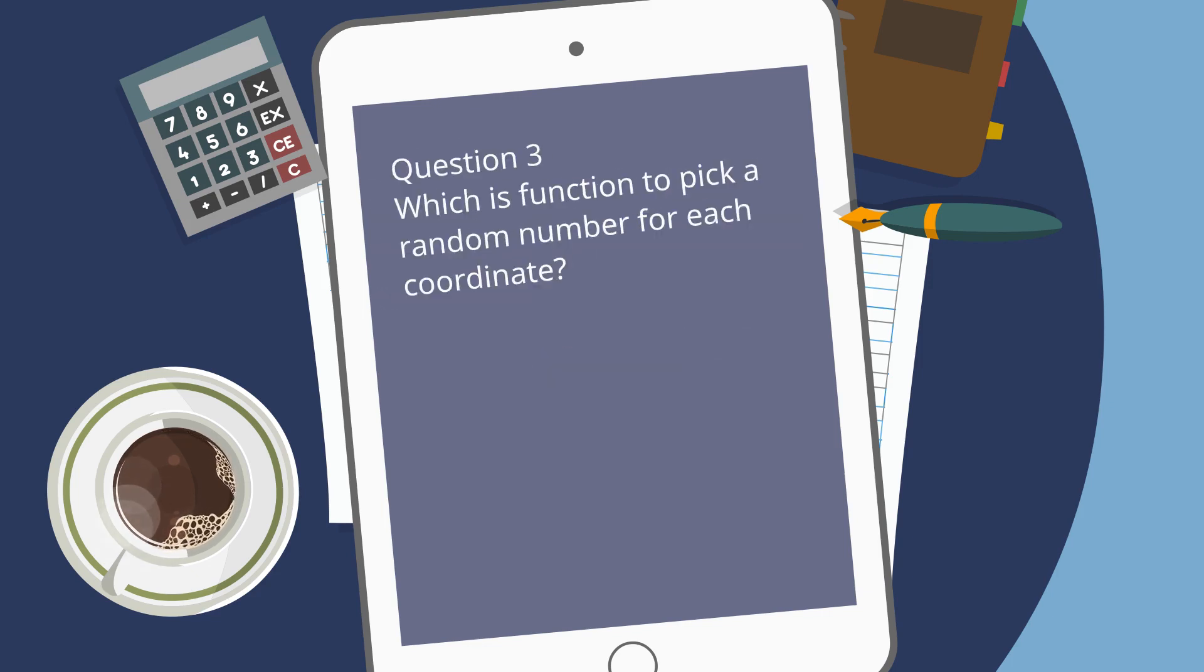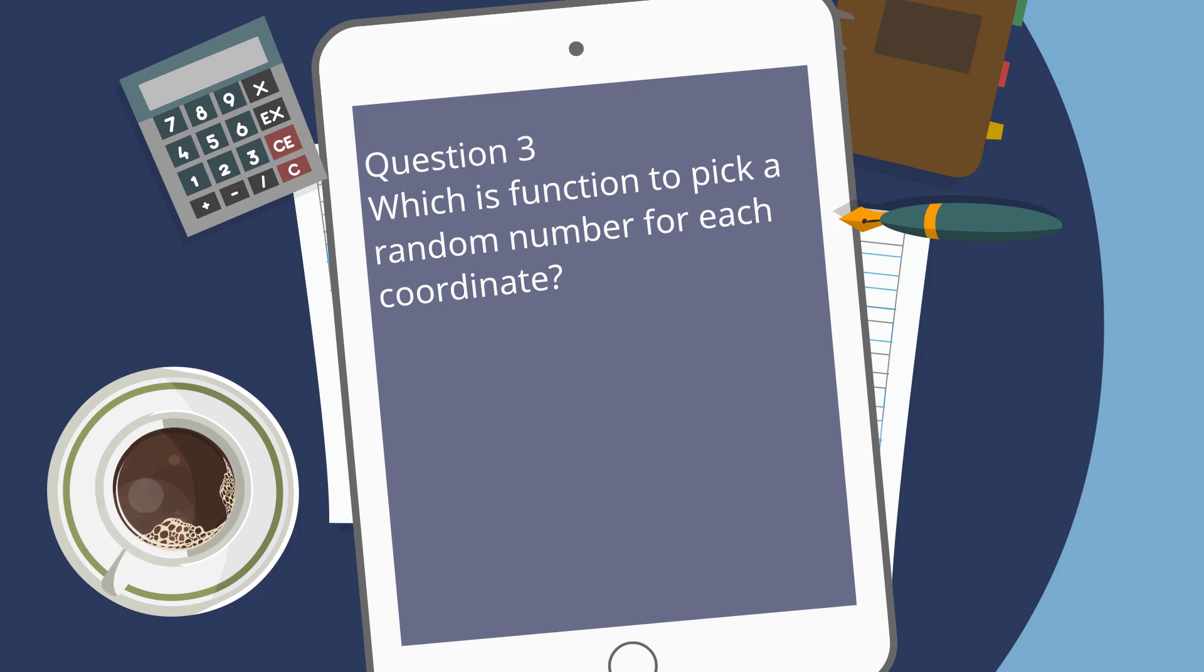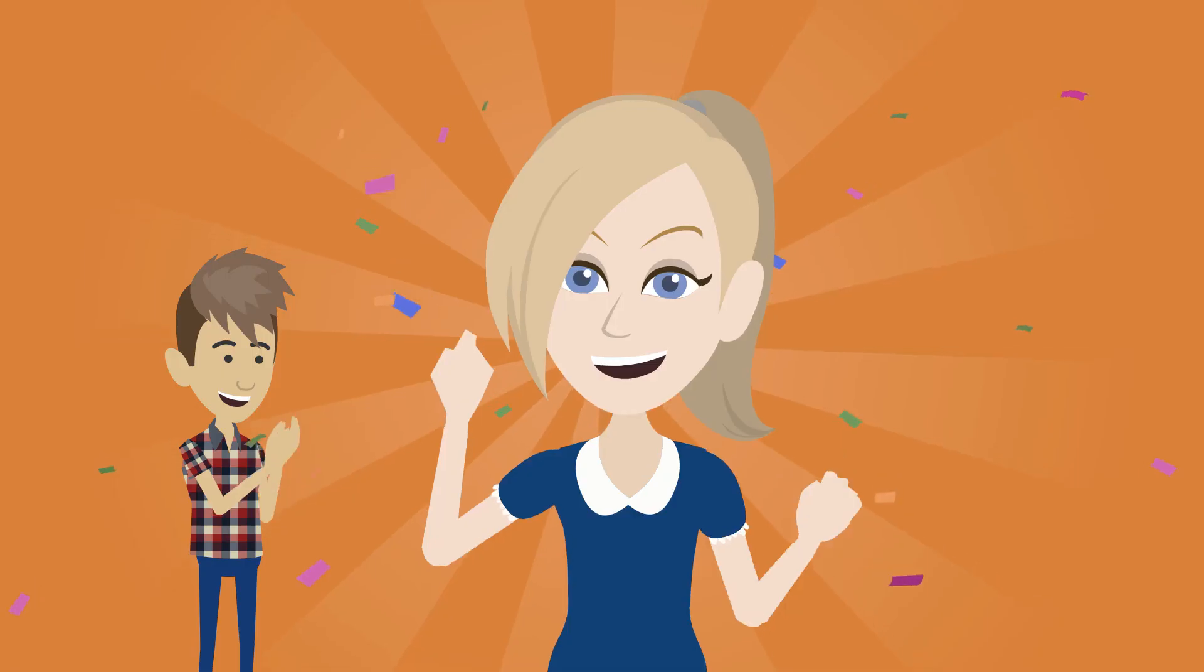Question 3. Which is function to pick a random number for each coordinate? A. Print quote you missed. B. Quit. C. Randint. The answer is C. The function picks a random number for each coordinate. Perfect!